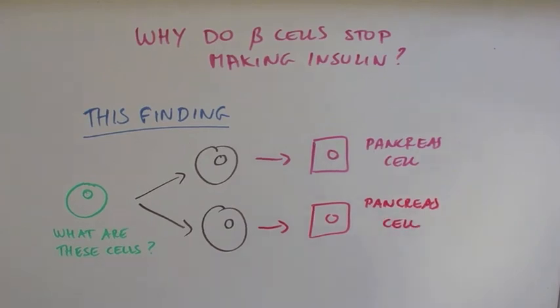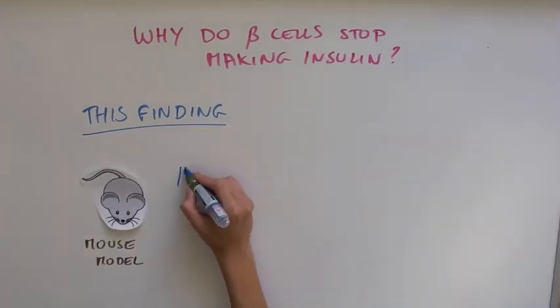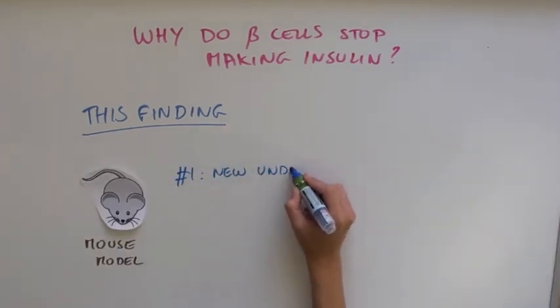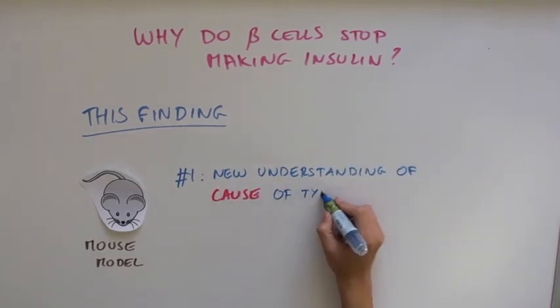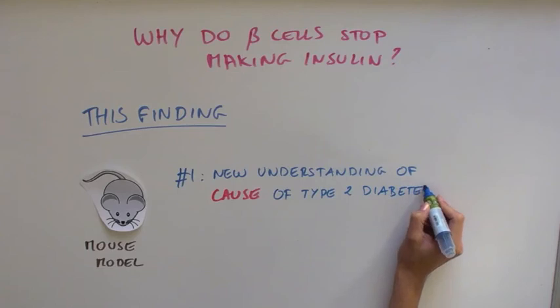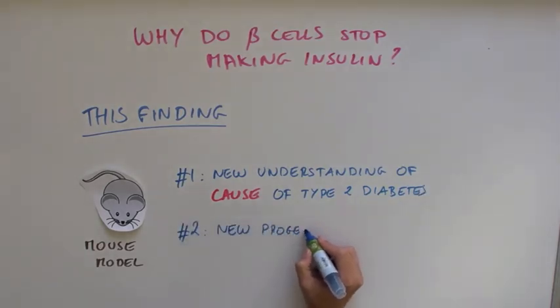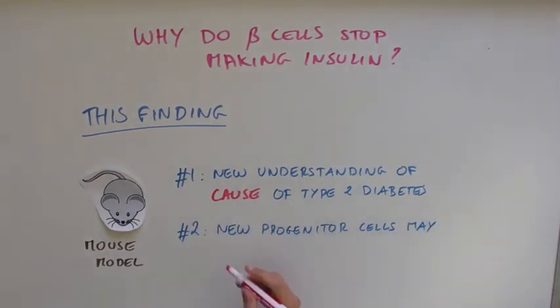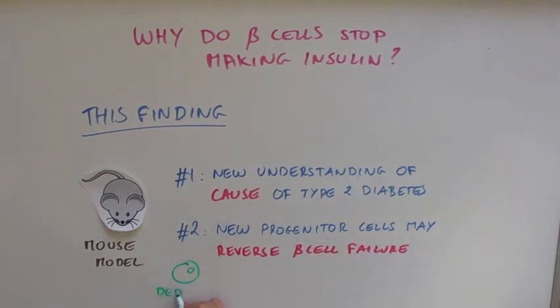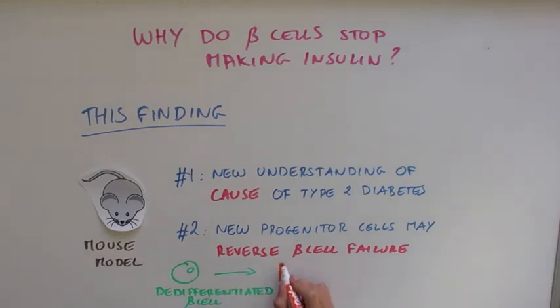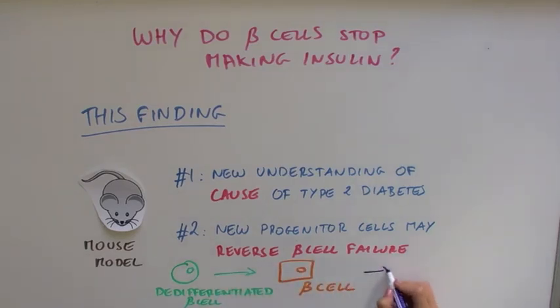So this finding is very interesting for a number of reasons. Number one, it provides a new understanding of the causes of type 2 diabetes that was not previously known. Number two, it suggests that there is no loss of cells in type 2 diabetes, so these new progenitor cells may still have the ability to turn back into beta cells and reverse beta cell failure to maybe cure type 2 diabetes.